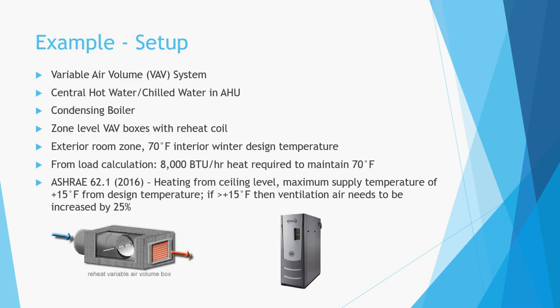For this example, let's assume we have a variable air volume, or VAV, system with central hot water and chilled water coils in an air handling unit. A condensing boiler is used for the hot water coils, and at the zone level we have VAV boxes with reheat coils. The advantage of this system is that the central air handler can supply a constant supply temperature to all the VAV boxes. Typical air handler supply temperature is 55 degrees to the VAV boxes.